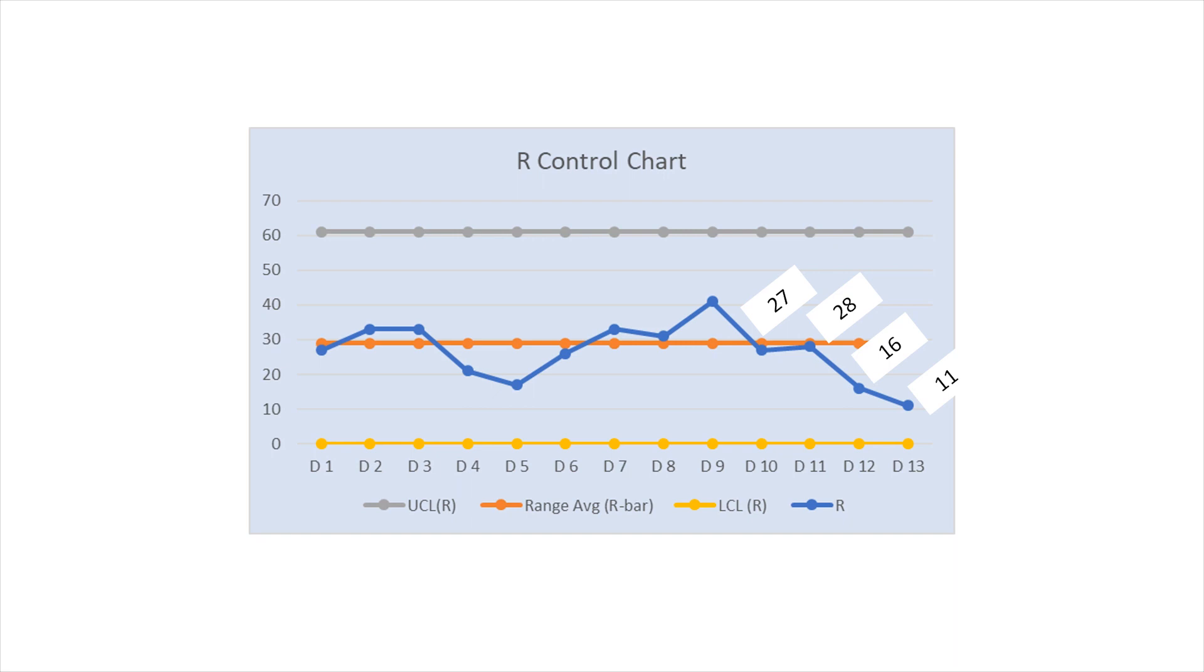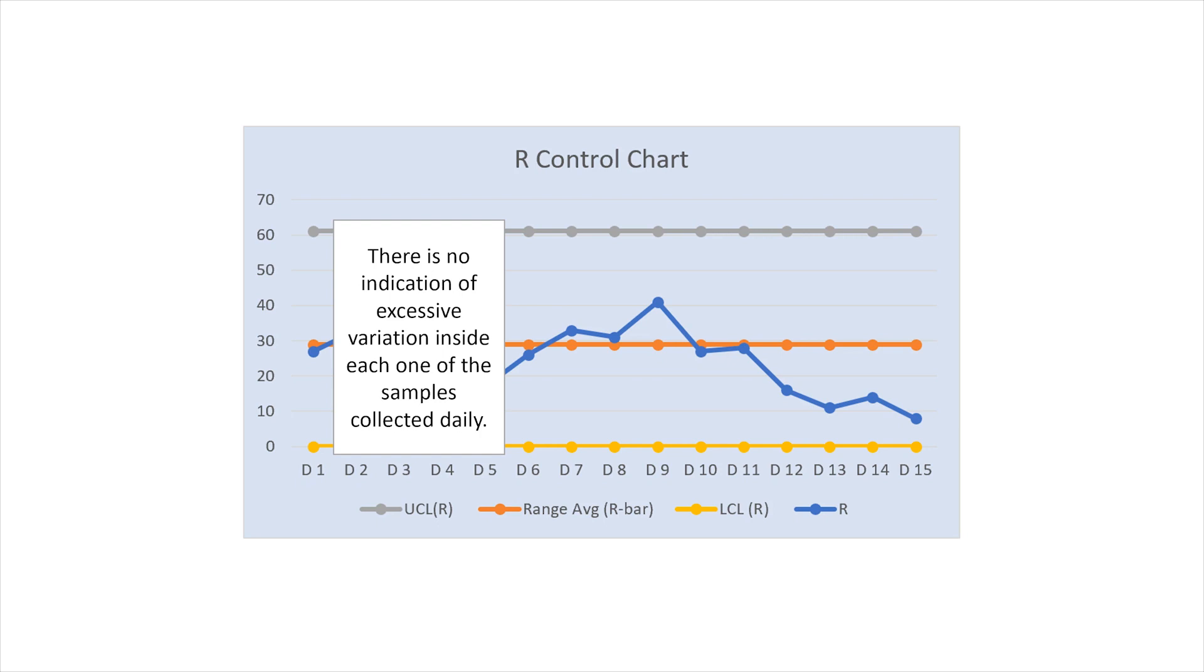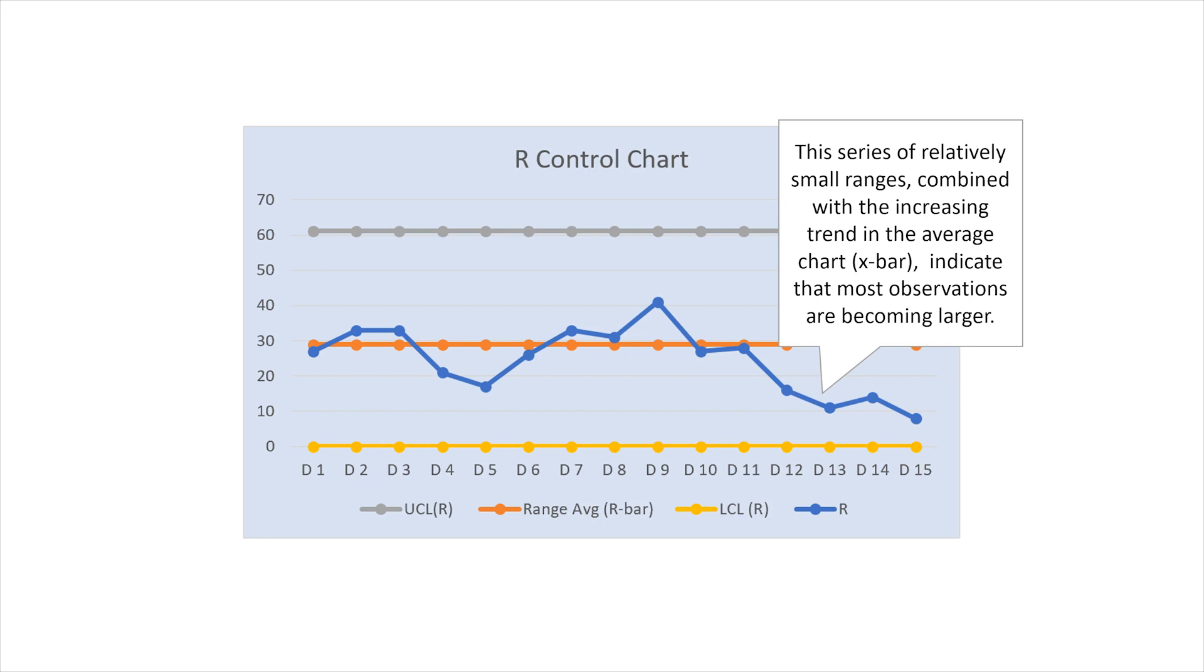That is the difference between the largest and smallest observation in each sample collected in days 10 through 13. By looking at the chart, we do not see any values going outside of the upper limit, which is about 60, and therefore there is no indication of excessive variation inside each sample collected daily. However, the last four or five observations show a series of relatively small ranges, which combined with the increasing trend in the average chart, the X-bar, indicate that most observations are becoming larger.